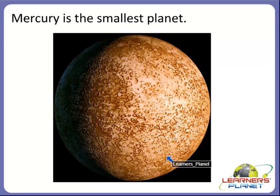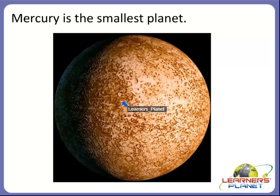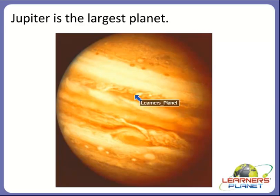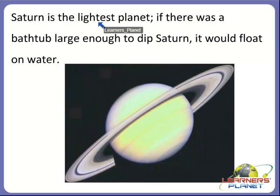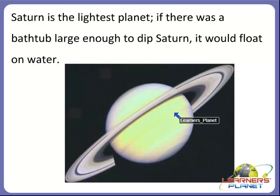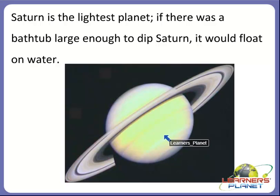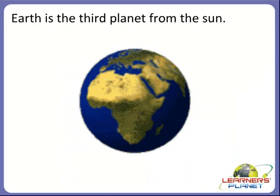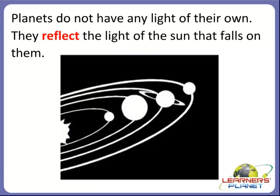Mercury is the smallest planet in the solar system. Jupiter is the largest planet of the solar system. Saturn is the lightest planet in the solar system — if there was a bathtub large enough to dip Saturn, it would float on water, so it is so light in weight. Earth is the third planet from the sun. Planets do not have any light of their own.